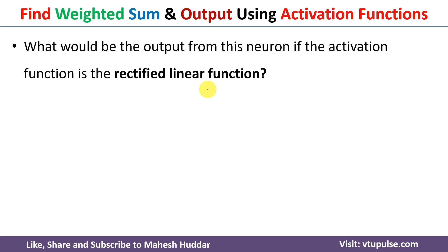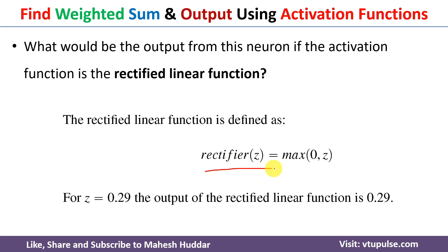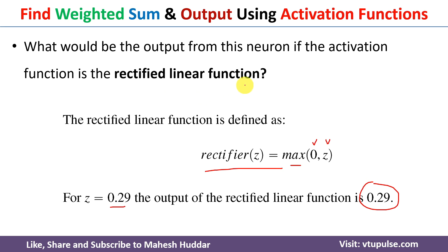The third activation function is the rectified linear function, also known as rectified linear unit or ReLU. The rectified linear unit works as follows: the rectifier of Z, where Z is the calculated weighted sum, is always equivalent to the maximum of 0 and Z. If the value of Z is less than 0, the output will be 0. If it is greater than 0, the output will be Z. Here, the value of Z is 0.29, which is greater than 0 — the maximum between 0 and 0.29 is 0.29 — so the output will be 0.29.